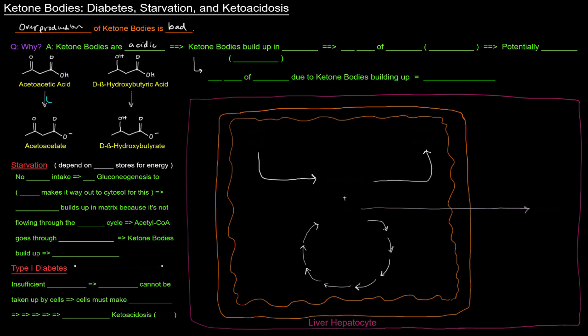And when they donate that proton to an environment, they acidify the environment that they're in. So what can happen is that ketone bodies can build up in the blood. And so ketone body buildup, that's called ketosis. Now ketone bodies being acidic, they build up in the blood, they will acidify the blood, they will decrease the pH of the blood, making it more acidic. That's called acidosis.